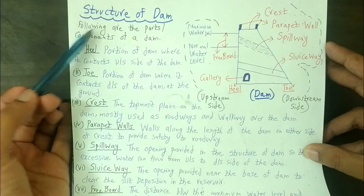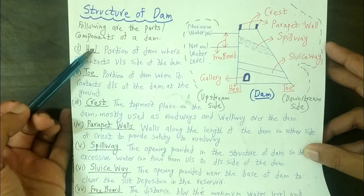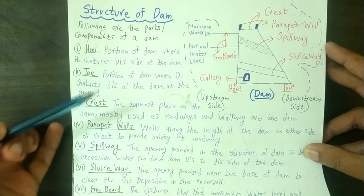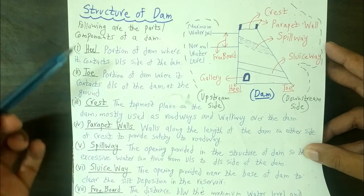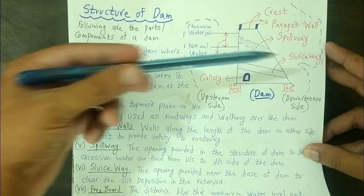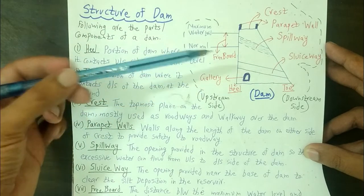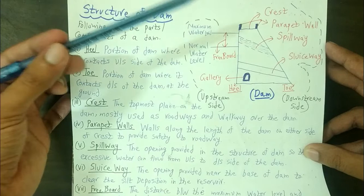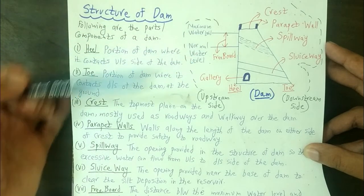Here you can see the parts or components of the dam. I have written different parts or components, but first we have to see the diagram. Here is the diagram of the dam structure, and you can see all the parts are labeled by the red pointer.